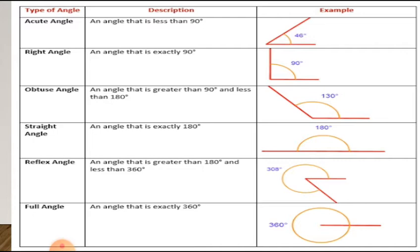What is straight angle? An angle that is exactly 180 degrees is called straight angle. What is reflex angle? An angle that is greater than 180 degrees and less than 360 degrees is called reflex angle. And a complete angle means an angle that is exactly 360 degrees.